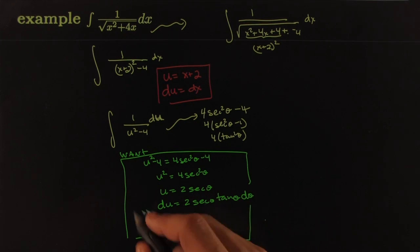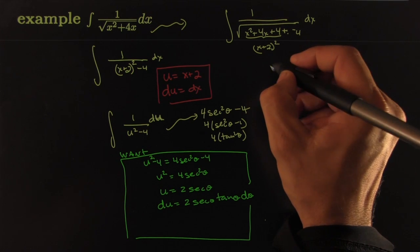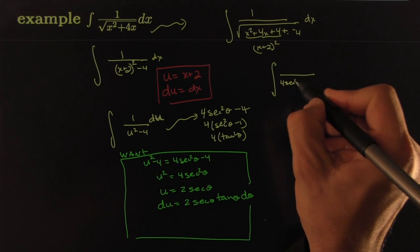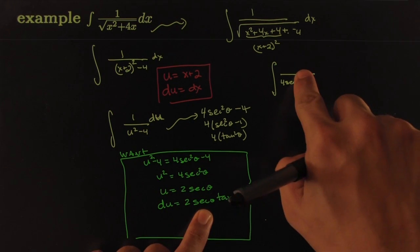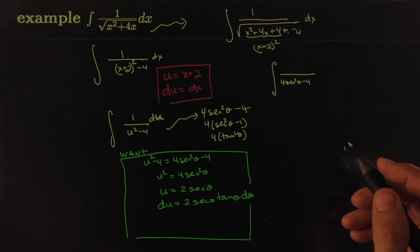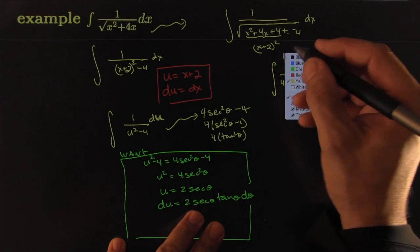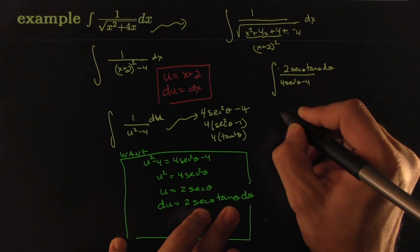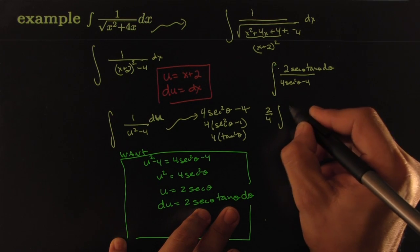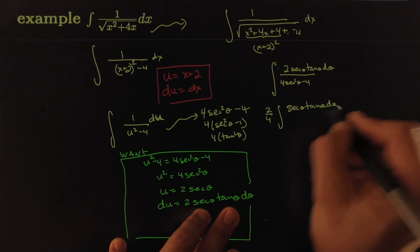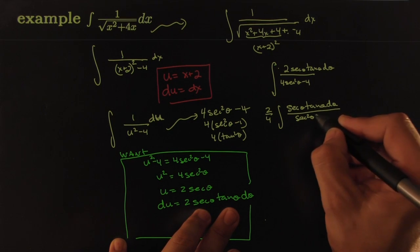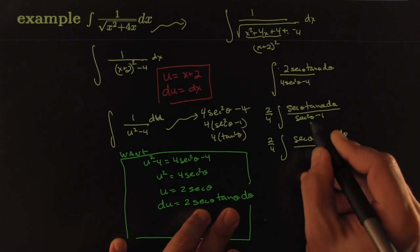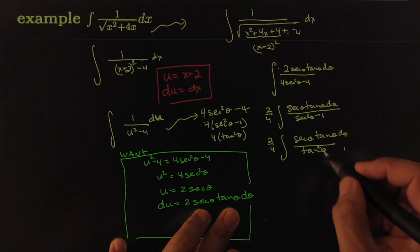Substituting in, the denominator u² − 4 becomes 4sec²θ − 4, and du = 2secθ tanθ dθ goes in the numerator. Factoring from the denominator gives 4(sec²θ − 1), which is 4tan²θ. So the integrand becomes secθ tanθ dθ over tan²θ. We can cancel one factor of tanθ from top and bottom.